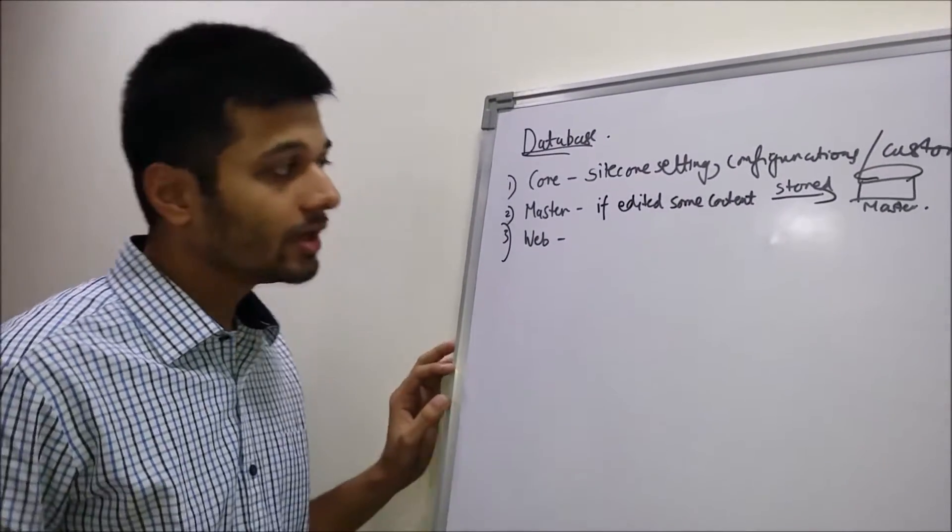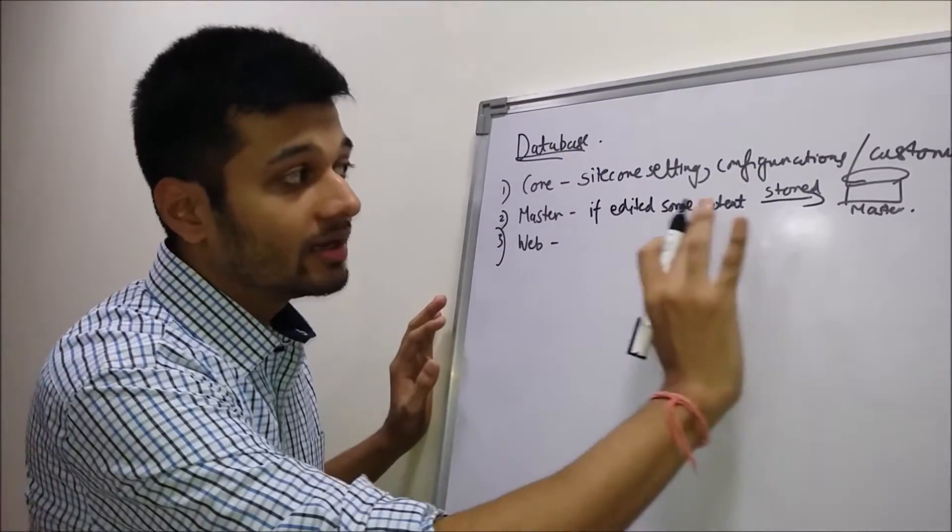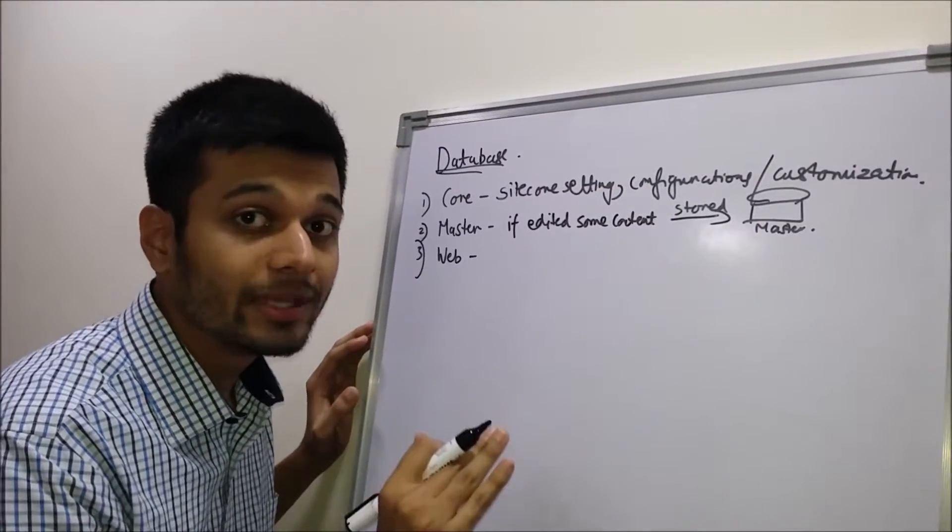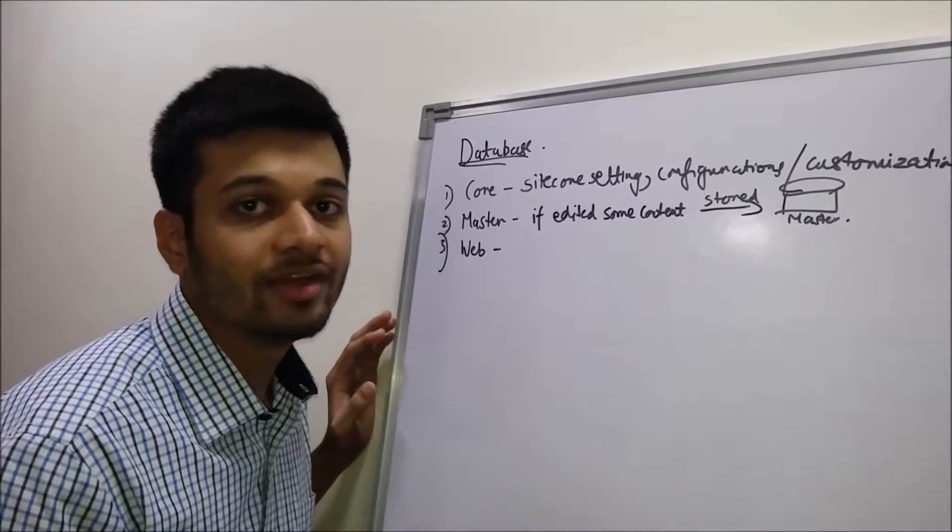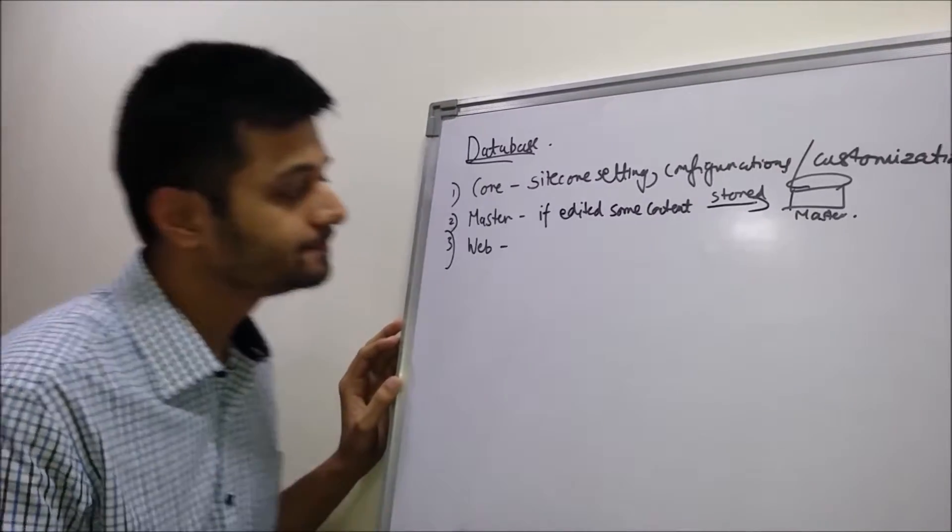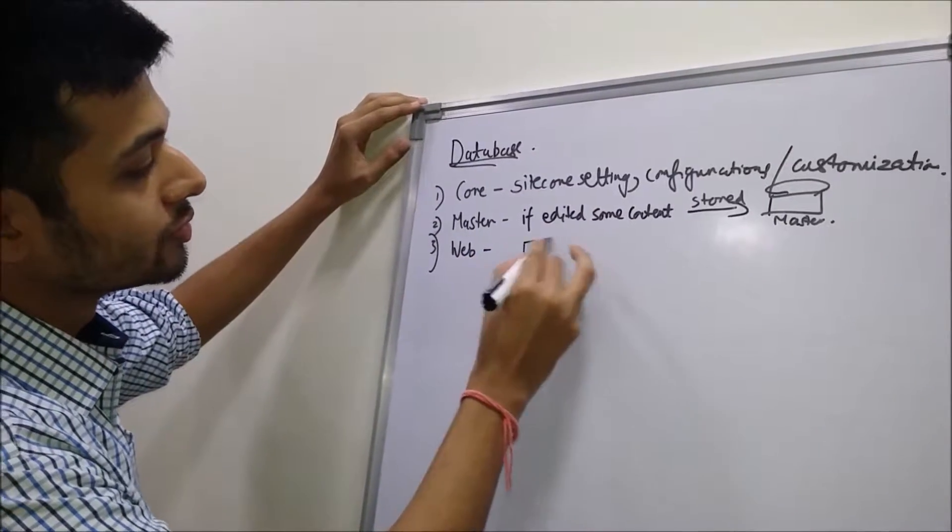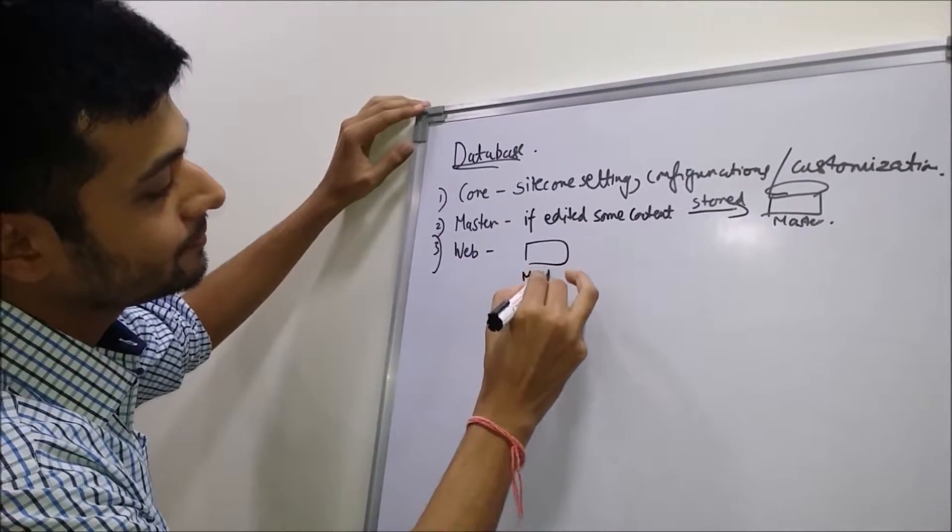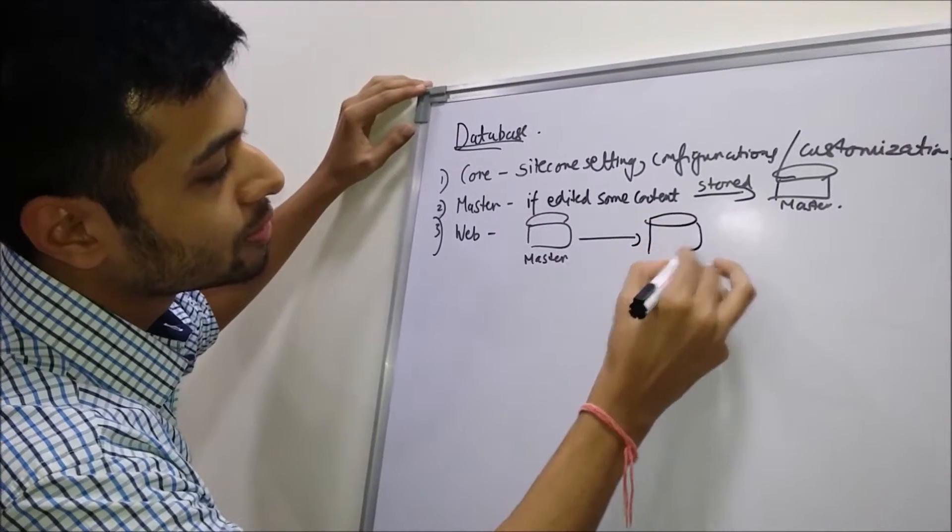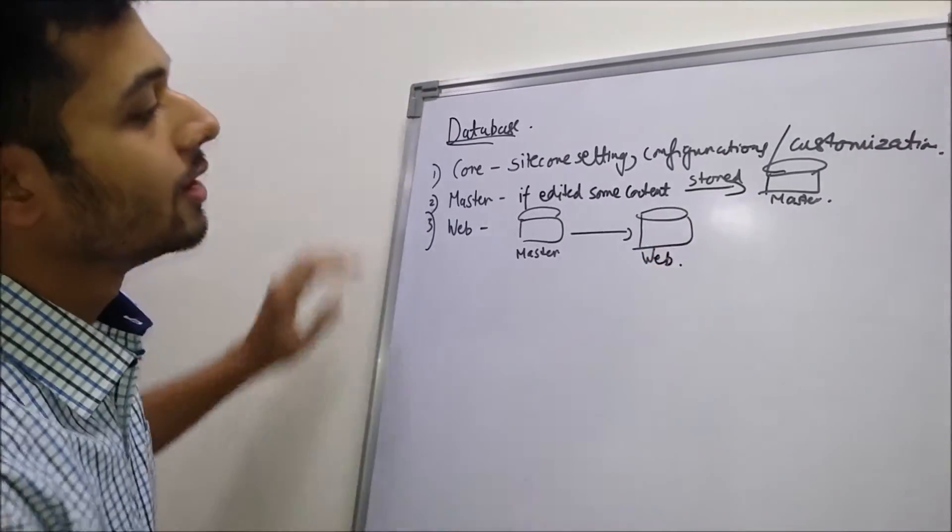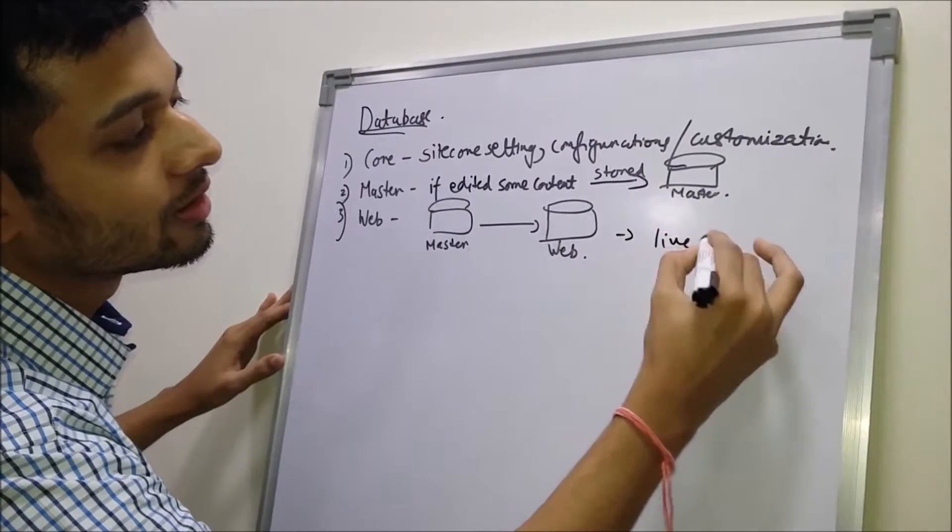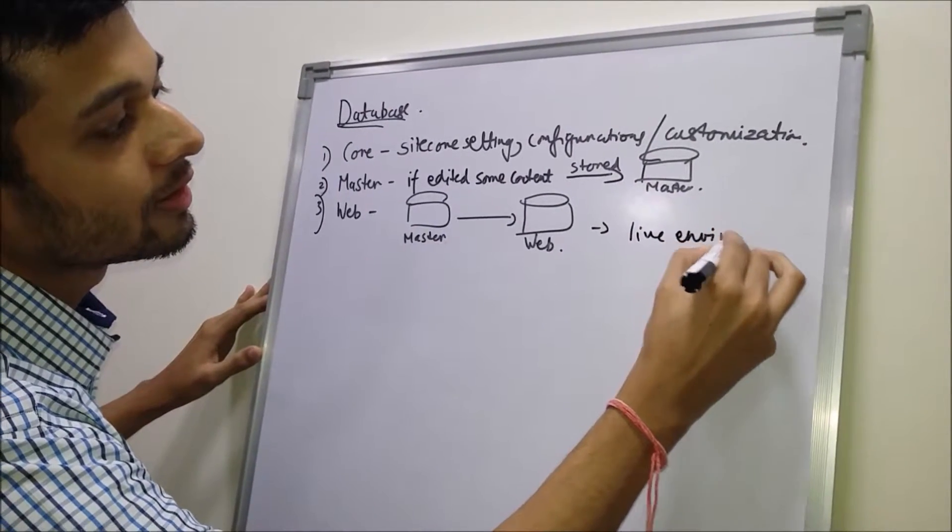Now let's see what is Web. If you edit some content, it's been stored in the Master database, then it gets pushed into the Web database, which in the end gets published on the live environment. It's basically the final stage where all the contents are published. So from the Master, it gets pushed to the Web database. We can say it is published and it is made live.